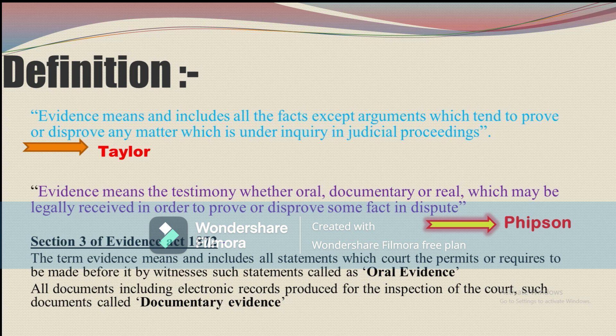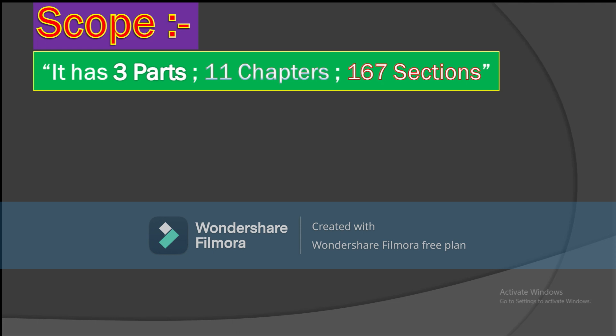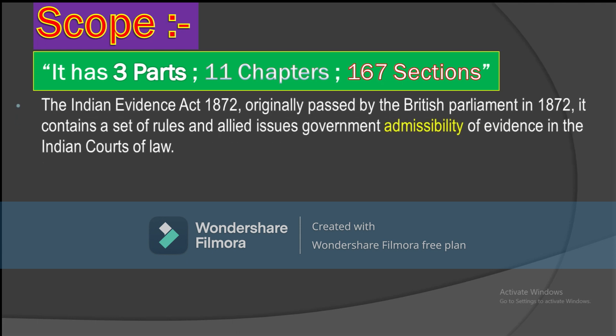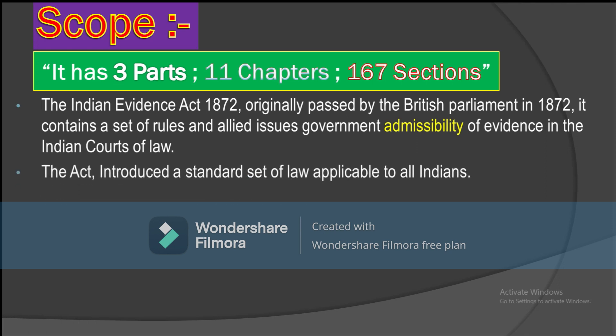Now let us discuss the scope, importance, and nature of the Indian Evidence Act 1872. The Indian Evidence Act has three parts, 11 chapters, and 167 sections. It was originally passed by the British Parliament in 1872. It contains a set of rules governing the admissibility of evidence in courts of law.